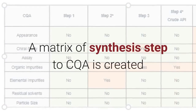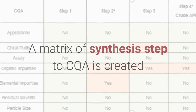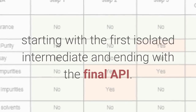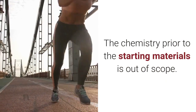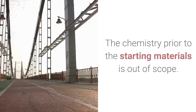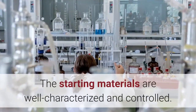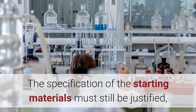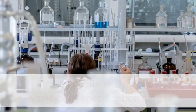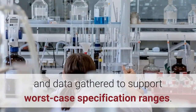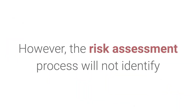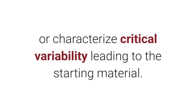A matrix of synthesis steps to CQA is created starting with the first isolated intermediate and ending with the final API. The chemistry prior to the starting materials is out of scope. The starting materials are well characterized and controlled. The specification of the starting materials must still be justified and data gathered to support worst-case specification ranges. However, the risk assessment process will not identify or characterize critical variability leading to the starting material.